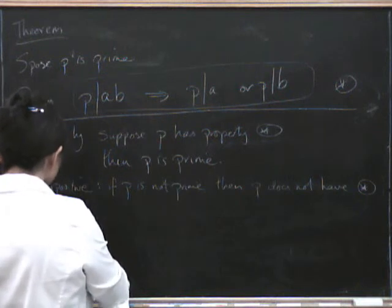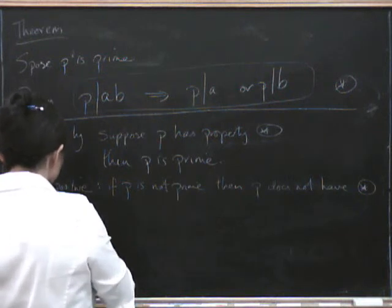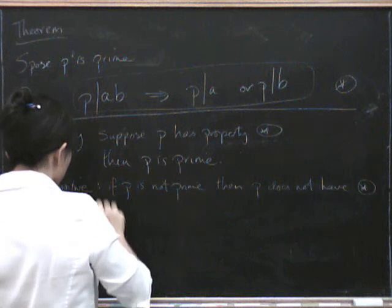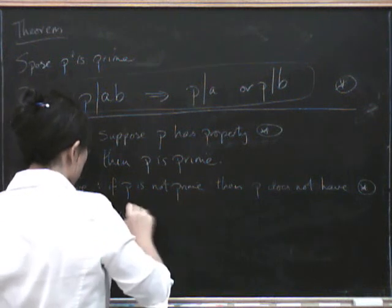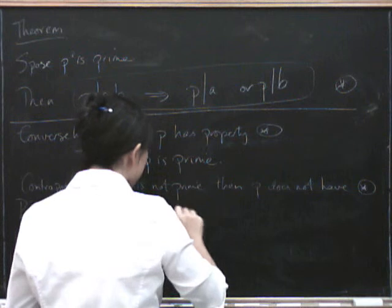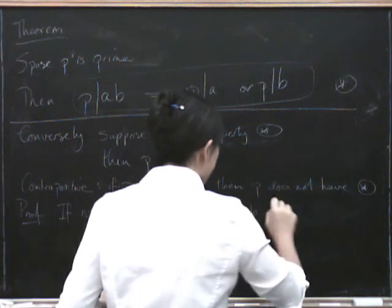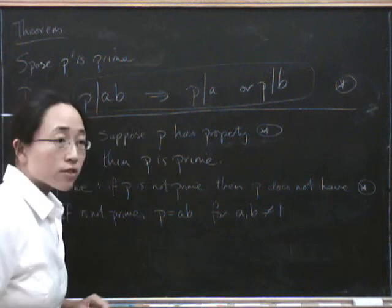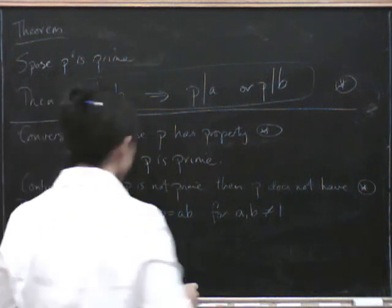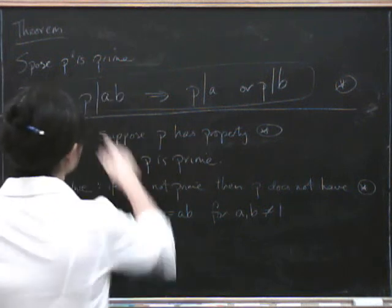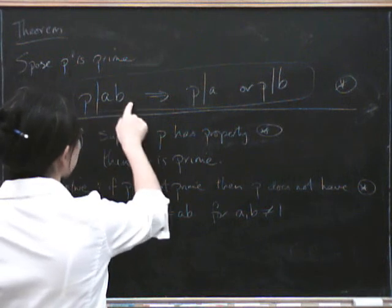So if p isn't prime, if p is not prime, then p equals ab for a and b not equal to 1. That's a non-trivial factorization of p. Well, in that case, we can just say p divides ab.